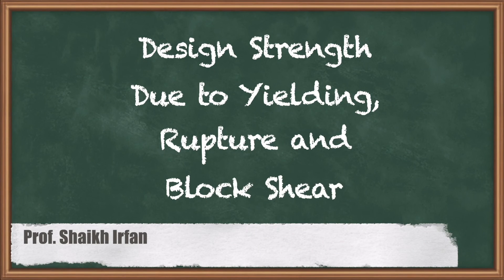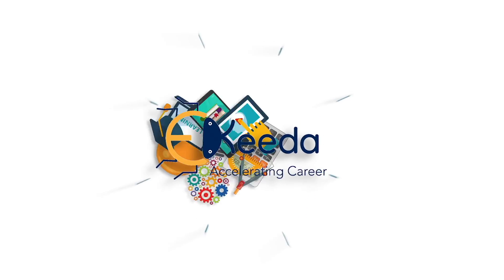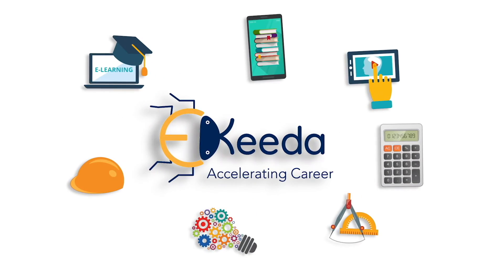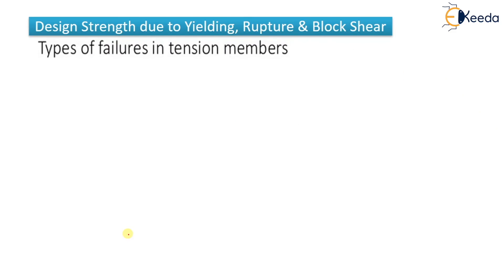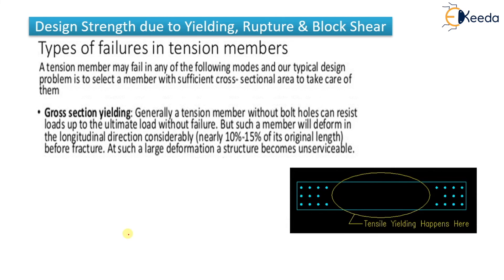In this video we are going to see the design strength due to yielding, rupture, and block shear. These are the types of failures in tension members — how a particular tension member can fail.